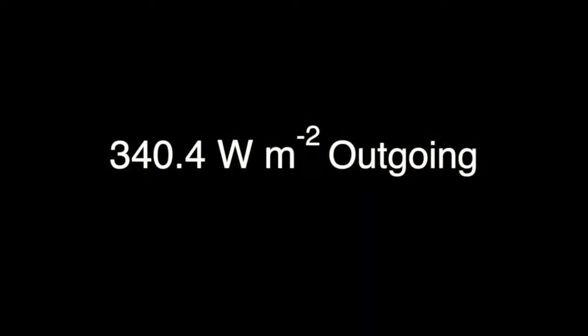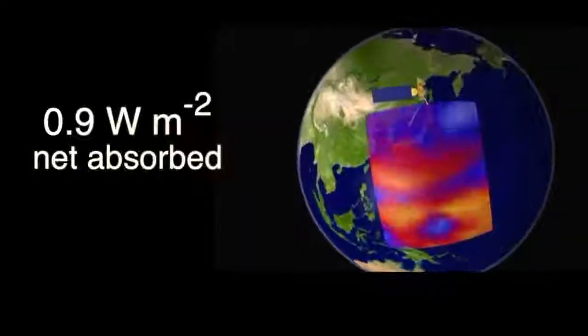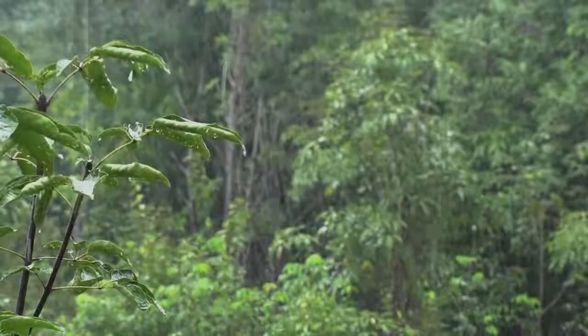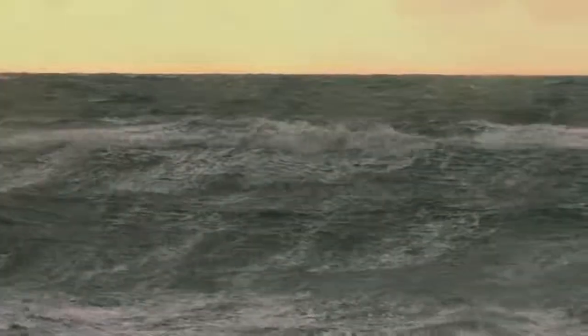You need only look to what's happening to greenhouse gases to see the causes of current imbalances. When Earth's energy absorbs more than it emits, what are the impacts? And where in the Earth's system does the extra energy go? How certain are scientists?